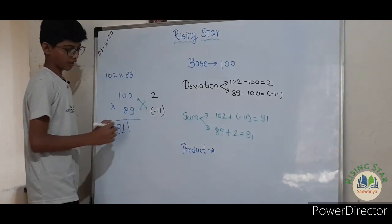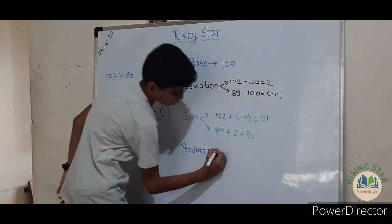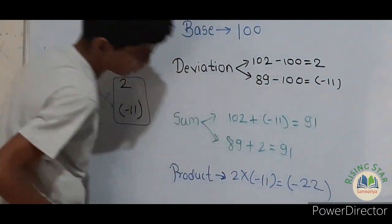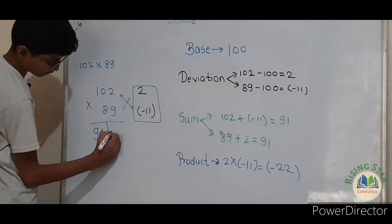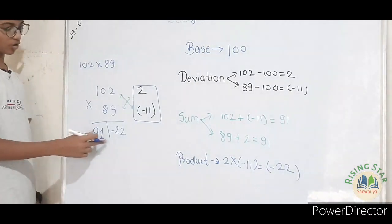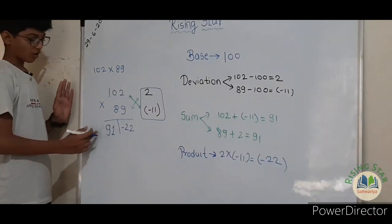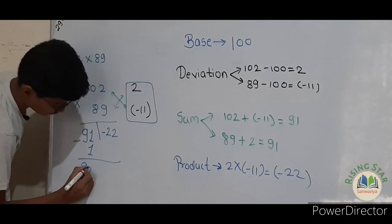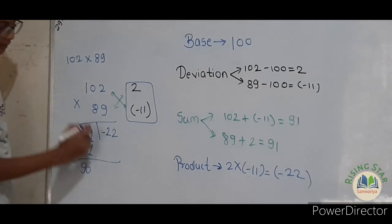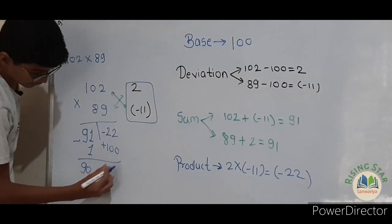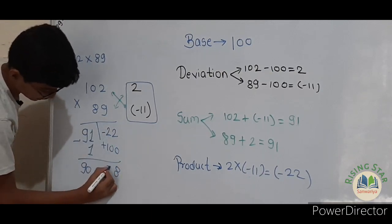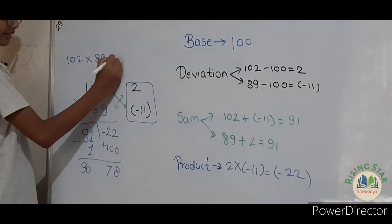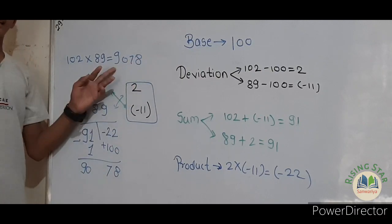Now let us find the product. Multiply 2 into minus 11, which gives minus 22. Write minus 22 here. But this can't be the final number, so subtract 1 from the sum side: 91 minus 1 gives 90. Then add the base 100 to the product: minus 22 plus 100 gives 78. So the answer is 102 into 89 equals 9,078.